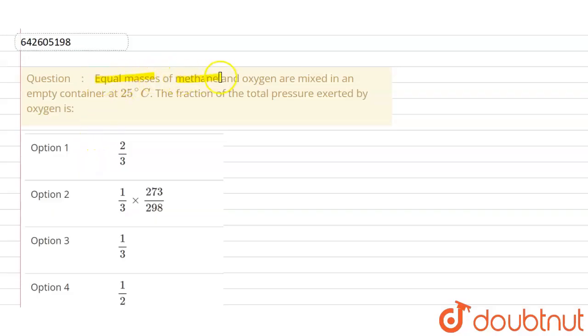Equal mass of methane and oxygen are mixed in an empty container at 25 degrees Celsius. The fraction of total pressure exerted by the oxygen - so the fraction of total pressure exerted by the oxygen, that you have to find here.